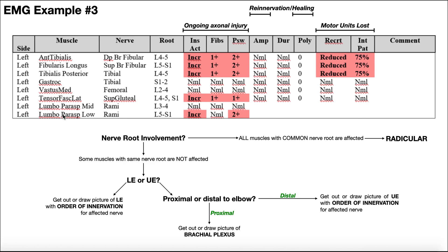We can play this game going all down this chart. On the left side here, it looks like there's a total of five muscles that are adversely affected. And if we look at the root values of these nerves that correspond to each of those five muscles, what you'll actually see is that L5 is common to all of them. Tibialis posterior has L5, tensor fascia latae has L5, and the lower lumbar paraspinal muscles also have L5. So our common nerve root level is L5, and all of the affected muscles have some L5 contribution.